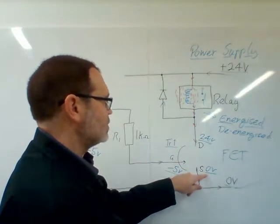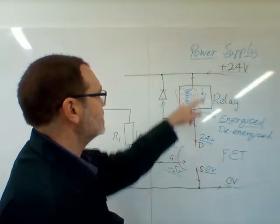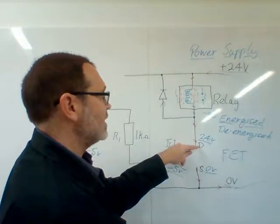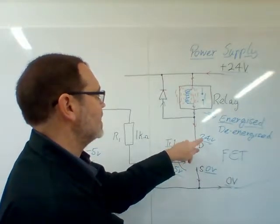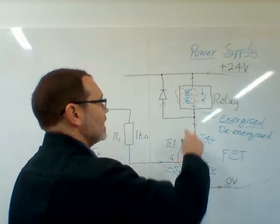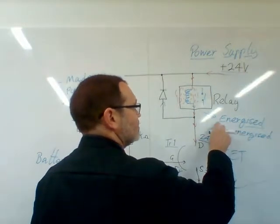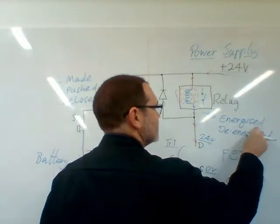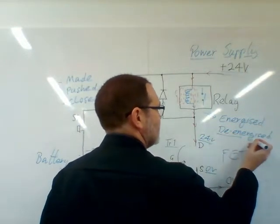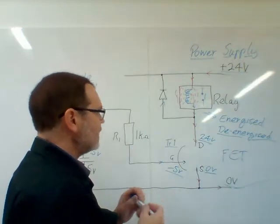That's with the switch pushed, made, or closed. Minus five on the gate turns the FET off. Source is connected to zero volts, so it's always going to be zero volts. The drain is still connected to 24 volts but it's not going anywhere, it's a dead end, so the pressure just builds up to the full rail supply of 24 volts. Current is no longer flowing through the coil, so now we switch from the relay being energized to de-energized.